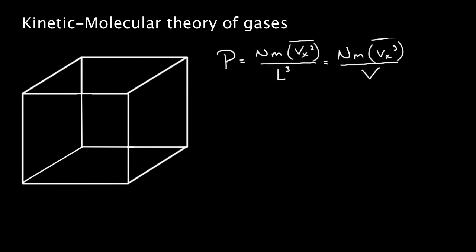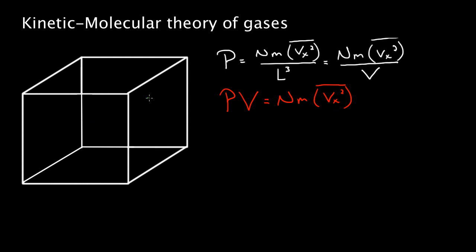If I multiply both sides by V, I get that pressure times volume equals the number of gas molecules N times M times the average squared x-velocity. So if I measured the pressure and volume of a gas, I could figure out what this average squared x-component of velocity is. That's a microscopic quantity — we now have a relationship between them.